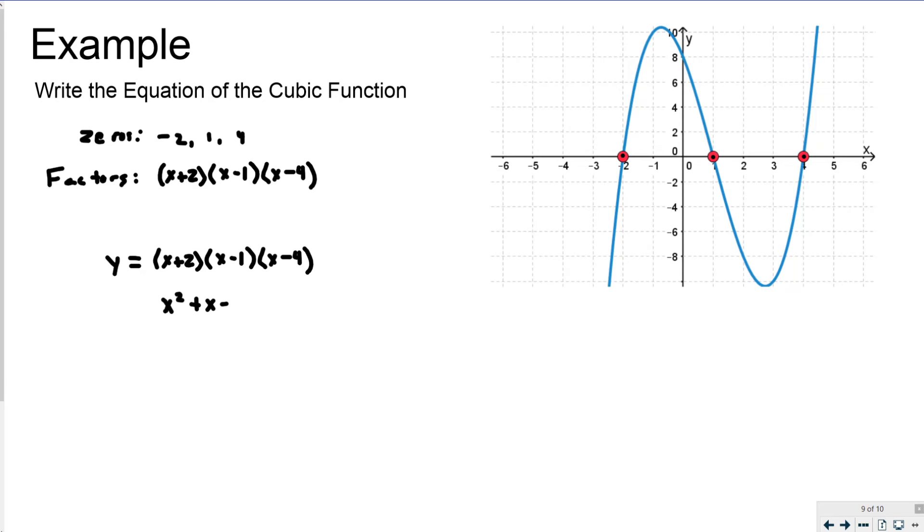And then the inner terms, the outer two terms is -1x. 2x minus x is still positive x. And then 2 times -1 is -2. So the first two have multiplied to be this and it still needs to be multiplied by x - 4. So y equals, this is the next step here. This transitions to this. What I am going to do now is go over here.